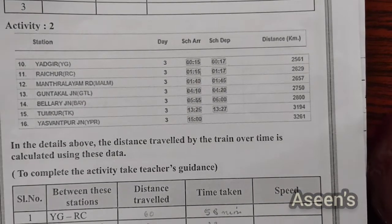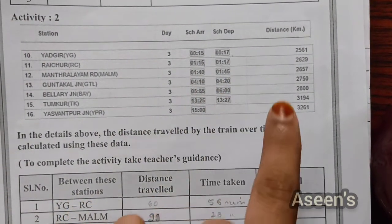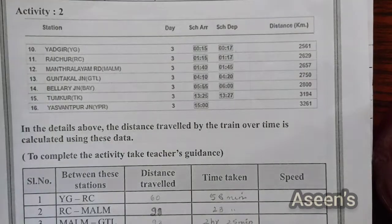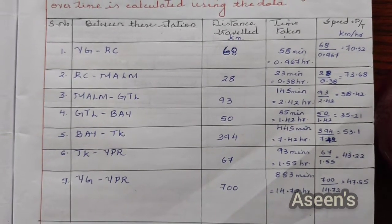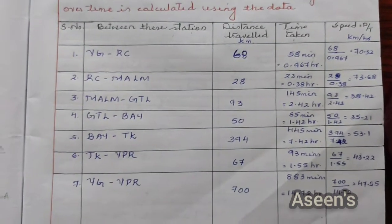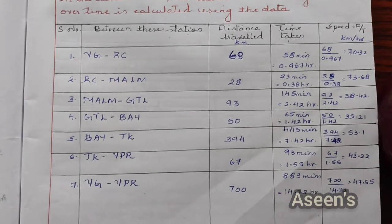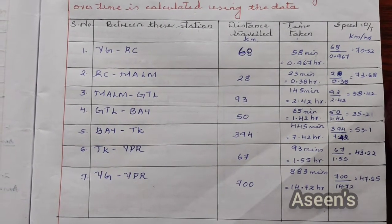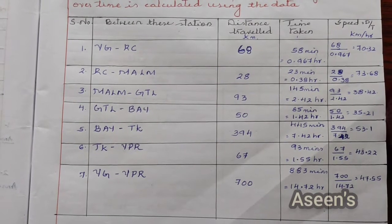Activity 2 has got this chart — a railway station chart with the scheduled arrival, departure, and distance in kilometers along with the stations. Considering this, we are supposed to answer the tabular column given below. For the first case, distance is 68 kilometers and time taken is 58 minutes. I have converted each time into hours since we will be calculating speed, which is equal to distance upon time, in terms of kilometer per hour.